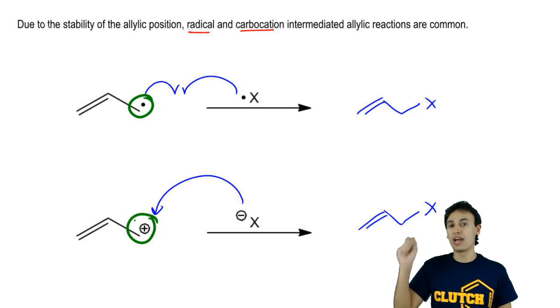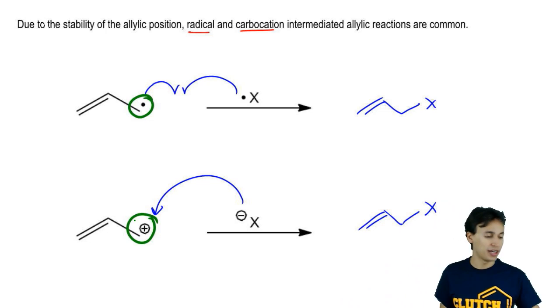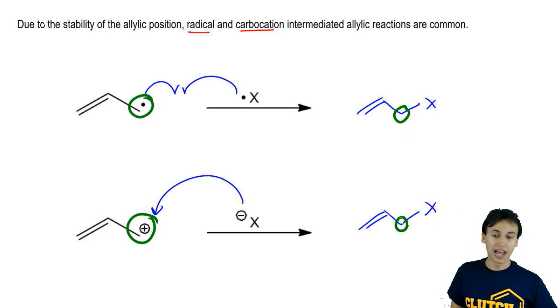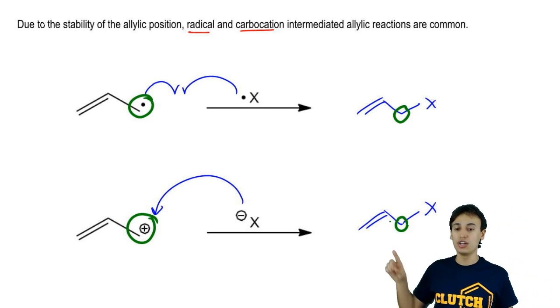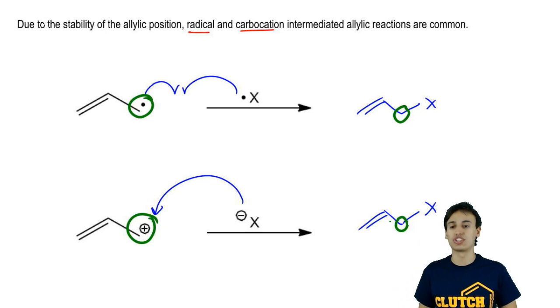Because if we can form a reactive intermediate at that position, it's highly likely to react with another reagent and we're going to wind up getting reactions at the allylic position where the double bond remains. But now we have a new atom attached to that allylic position.